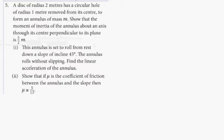This is Exodus 14C and we are on question 5. A disc of radius 2 meters has a circular hole of radius 1 meter removed from the center — that's the annulus — of mass M. We need to show the moment of inertia of the annulus about an axis through its center perpendicular to its plane.